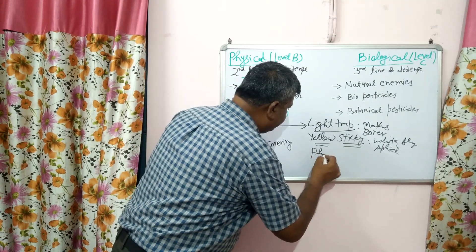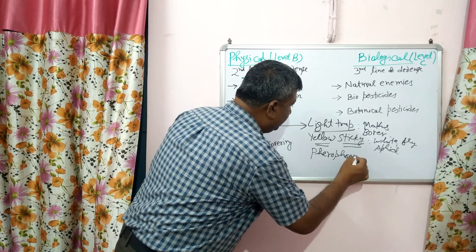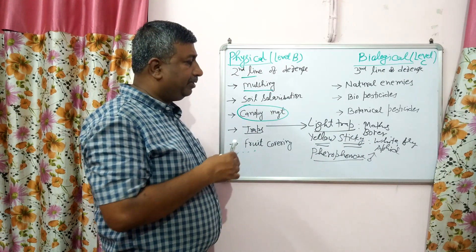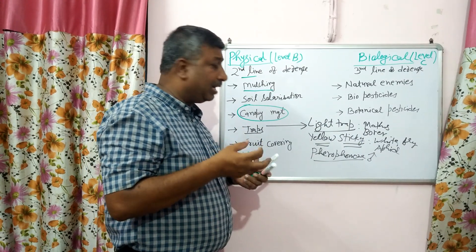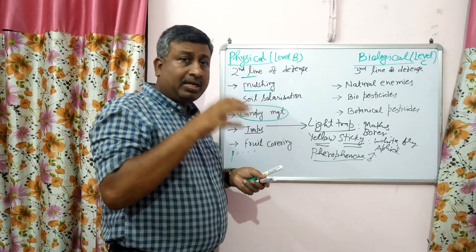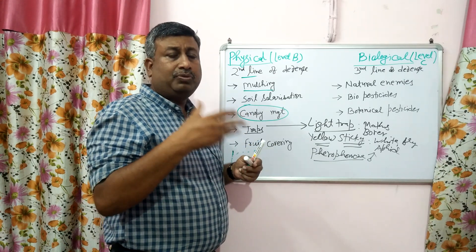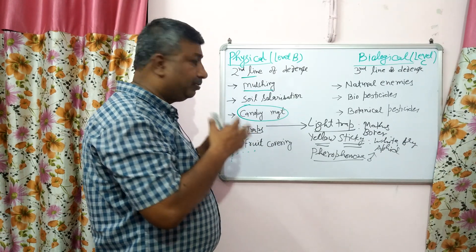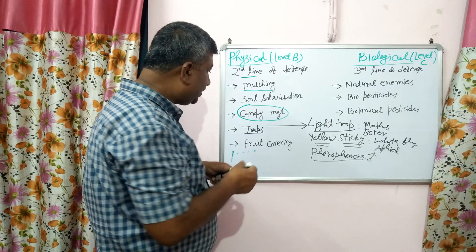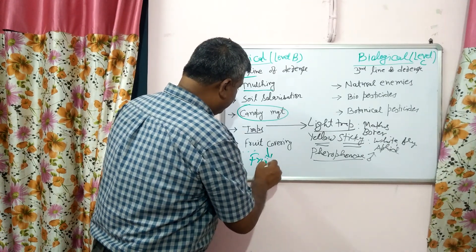Pheromone traps use chemical lures that attract male Lepidoptera insects. Male insects are attracted towards pheromones, get trapped, and there is no mating — causing mating disruption. With no mating, there is no further increase in population. This is a very good method and these traps are placed in the field.